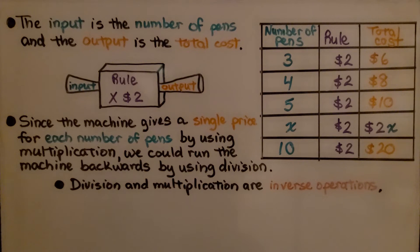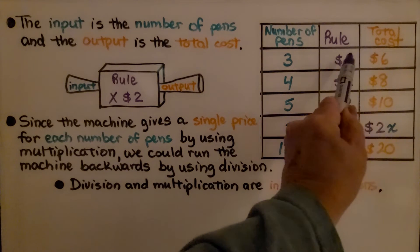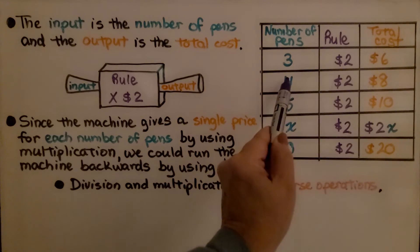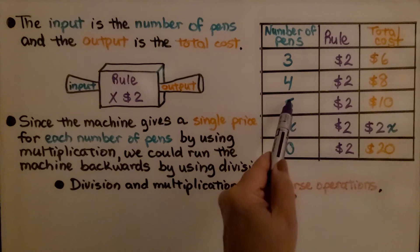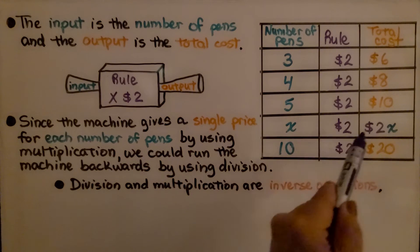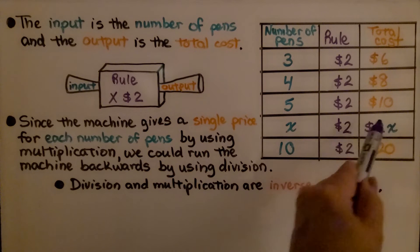Since the machine gives a single price for each number of pens by using multiplication, we could run the machine backwards by using division. Division and multiplication are inverse operations. We could do 6 divided by 2 is 3, 8 divided by 2 is 4, 10 divided by 2 is 5, and 20 divided by 2 is 10. And we could do x divided by 2.